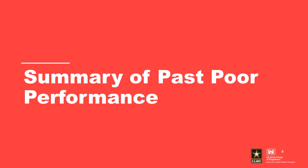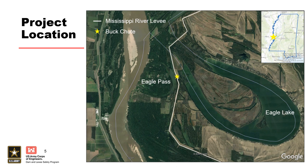First, a quick reintroduction of the project area and a summary of past performance at the levee. Buck Chute is located along the main stem levee system of the Mississippi River and Tributaries Project, 16 miles northwest of Vicksburg, Mississippi. The mainline levee was constructed between Eagle Pass and Eagle Lake, two channel deposits associated with the Mississippi River.